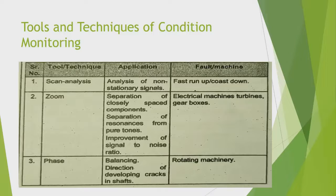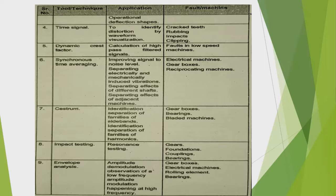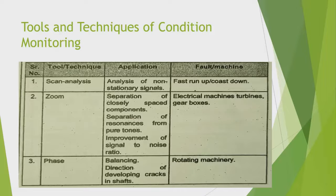Tools and techniques of condition monitoring. There are nine points. The first is scan analysis — its application includes analysis of non-stationary signals, fast run-up and run-down, zoom, separation of closely spaced components, separation of resonance from pure tones, and improvement of signal-to-noise ratio. Applicable to electrical machines, turbines, and gearboxes.